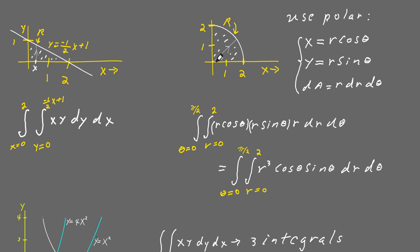You can do this integral by integrating from r equal to 0 out to r equal to 2 for some fixed value of theta — that integration is like taking a ray and extending it outward. Next, you take this ray and spread it out, which is equivalent to integrating from theta equal to 0 up to theta equal to pi over 2. Then you combine the r terms to get r cubed, cosine theta, and sine theta, giving an integral that's pretty easy to do.